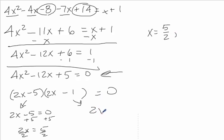And then the other, 2x minus 1 equals 0, we add 1. We get 2x equals 1, divide by 2. So our other answer is 1 half.